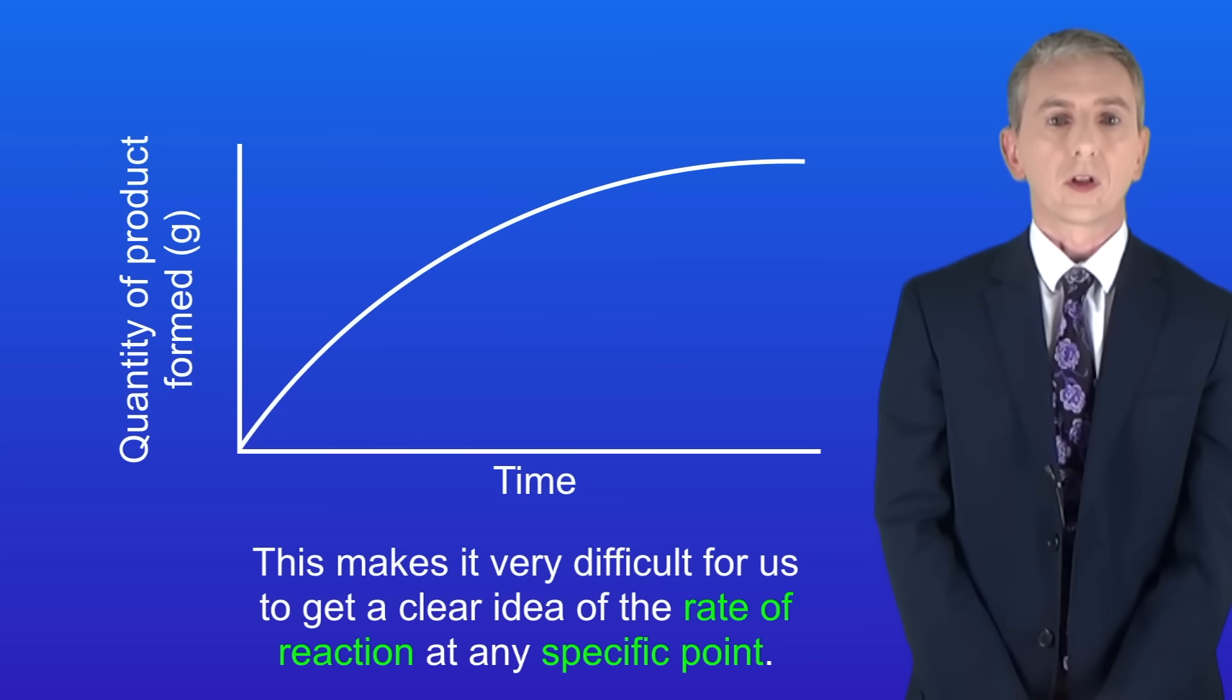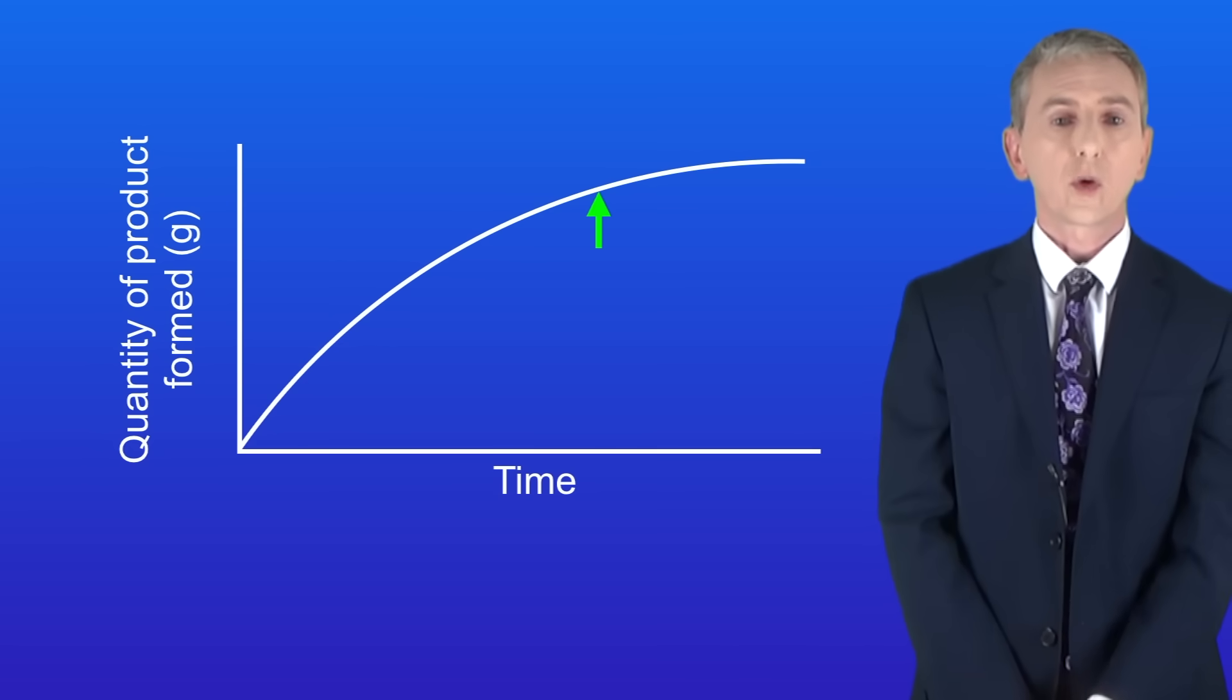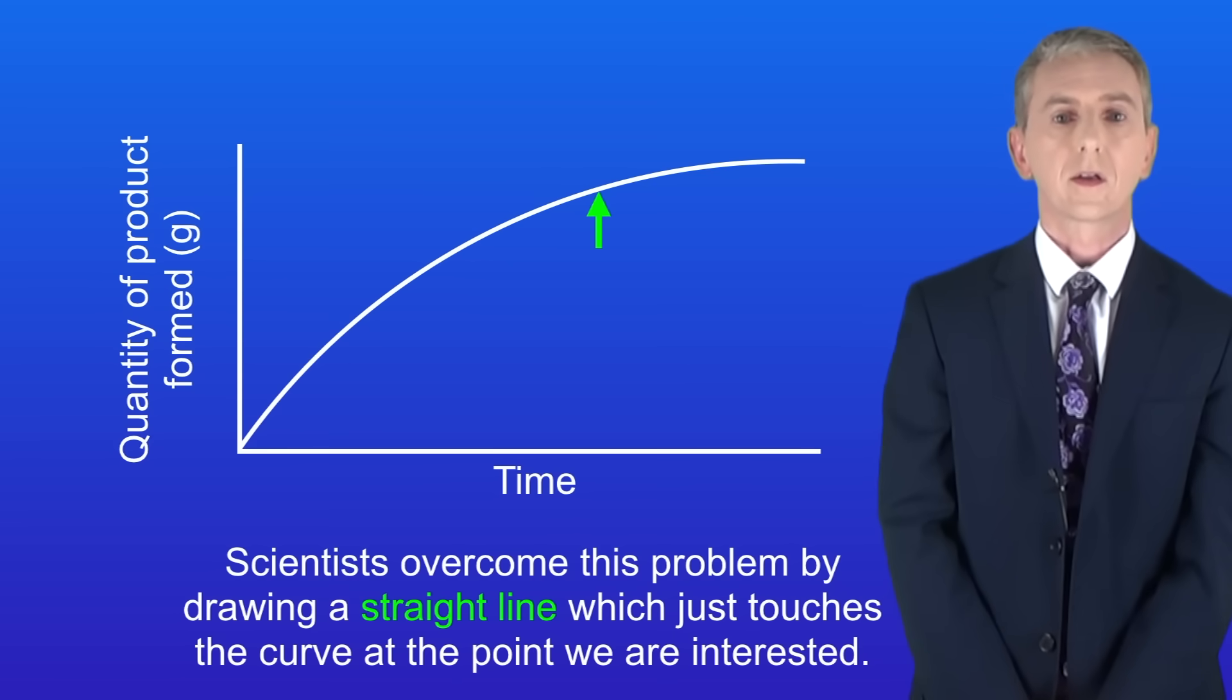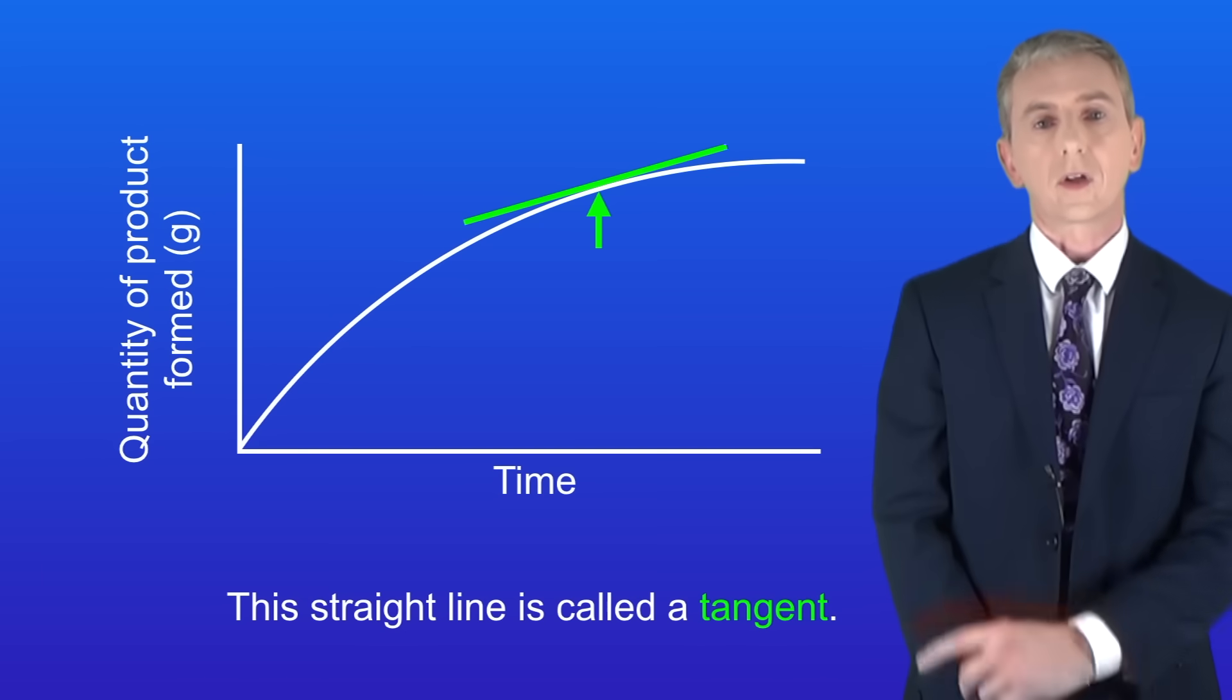Imagine that we wanted to measure the rate of the reaction at this point. Again as you can see the slope of the curve is changing. Scientists overcome this problem by drawing a straight line which just touches the curve at the point we're interested. This straight line is called a tangent. I'm showing you the tangent here.